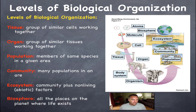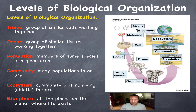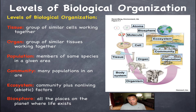Basically, the short version goes: tissue, organ, population, community, ecosystem, biosphere. But if you look at this picture, we start at atoms and go all the way up to the biosphere. This is our entire levels of organization — we go from smaller to more complex. Atoms become molecules.